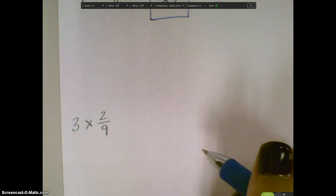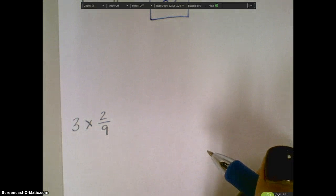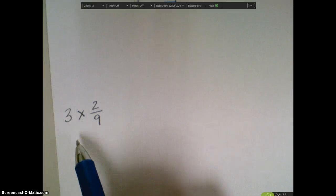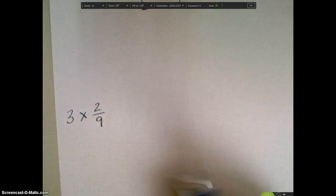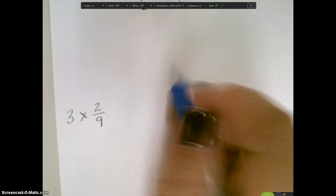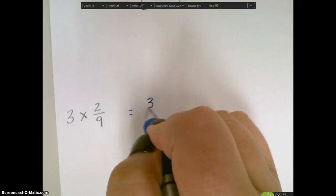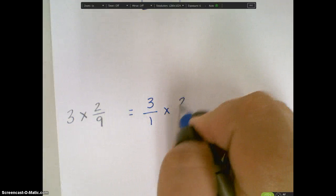For the next one, 3 times 2 ninths. So for this problem, because I have a whole number, I have to turn that first into a fraction. And whenever we have a whole number, we can just put it over 1 because a fraction is a division problem, and when I would divide it by 1, I would get itself. So I'm going to turn this into 3 over 1 times 2 over 9.